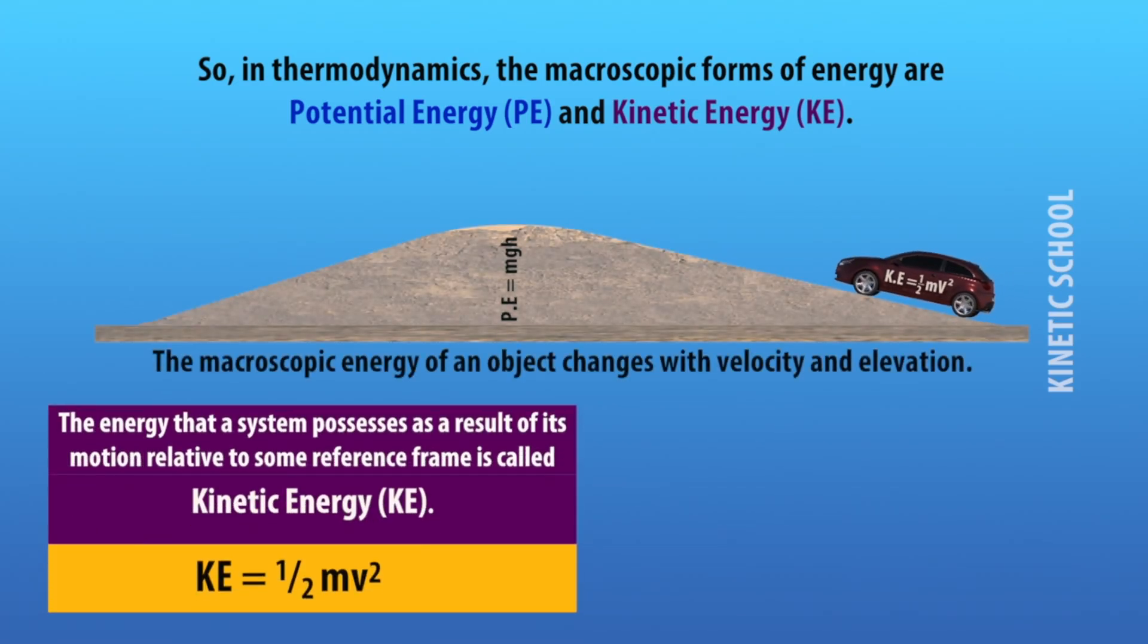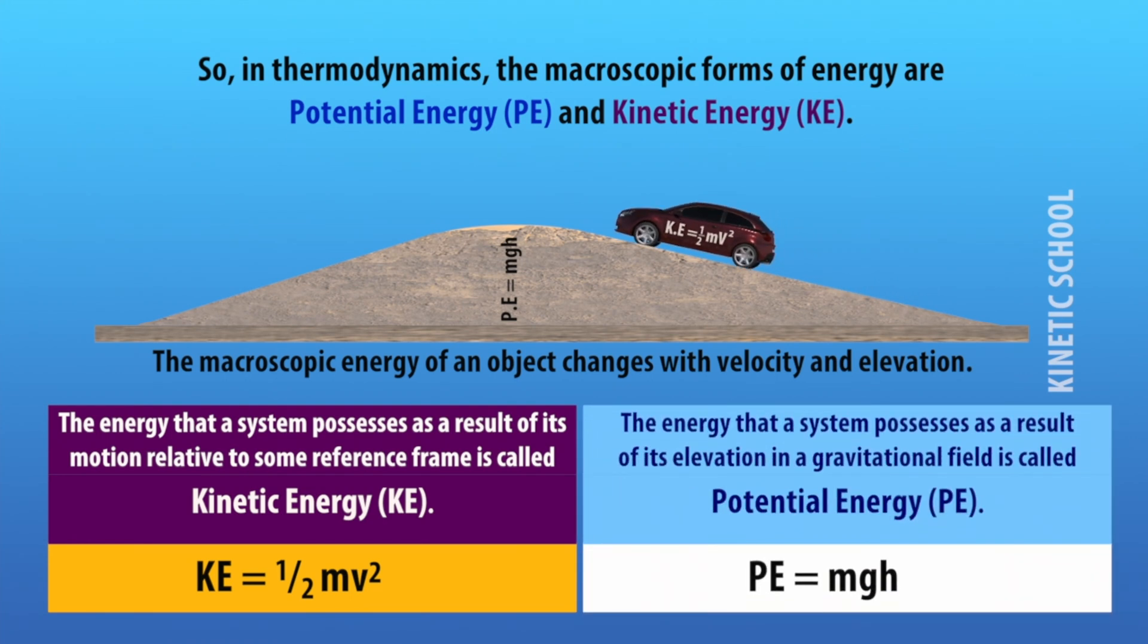The energy that a system possesses as a result of its motion relative to some reference frame is called kinetic energy. And the energy that a system possesses as a result of its elevation in a gravitational field is called potential energy.